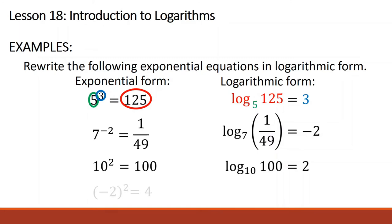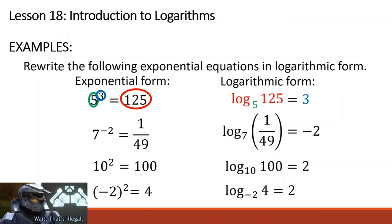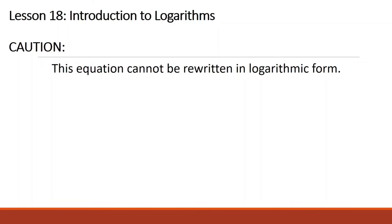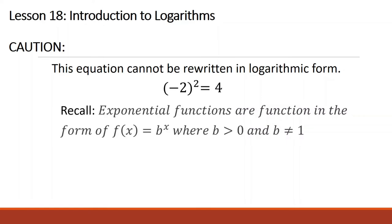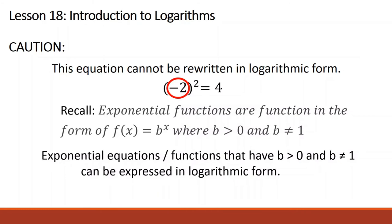Next, negative 2 raised to 2 is equal to 4. This would be logarithm of 4 base negative 2 is equal to 2 — but this is actually wrong. This equation cannot be rewritten in logarithmic form. Why? Because exponential functions require the base b to be greater than 0 and not equal to 1. Since our base is negative, it is not a valid exponential function. Only exponential equations with base greater than 0 and not equal to 1 can be expressed in logarithmic form.